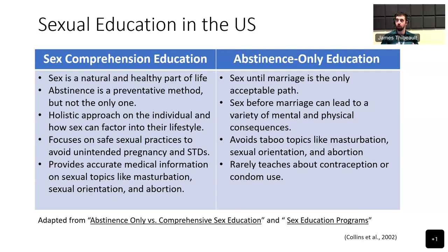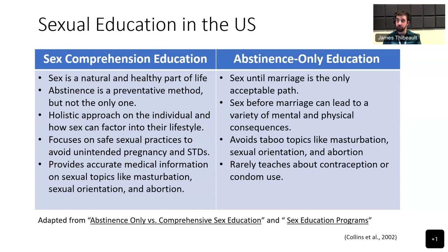Comprehensive sex education is more holistic. It does discuss abstinence as one method among many, and also covers contraceptives, how sex factors into your lifestyle, different types of STIs, gender identity, and sexual orientation. It looks at the big picture, which can be more controversial to those with conservative views. There is very little evidence that abstinence-only education reduces pregnancies or sexually transmitted diseases, whereas there is substantial evidence that comprehensive sex education does work.